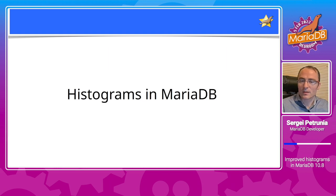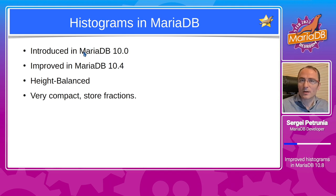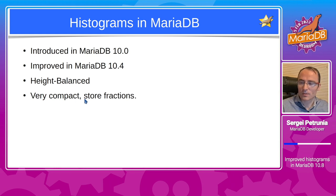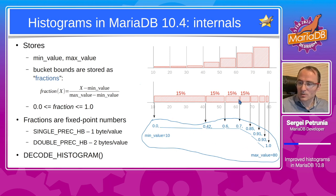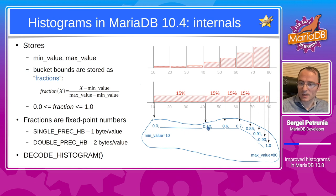Histograms in MariaDB were introduced back in MariaDB 10.0, then improved in MariaDB 10.4. MariaDB uses height-balanced histograms, but unlike other databases it uses a very compact format where it doesn't store values but stores fractions. It stores the minimum value, the maximum value, and for bucket boundaries between them it stores a fraction — a number between 0 and 1 representing how close the value is to the minimum (0) or maximum (1). For example, the first bucket is at 42% between minimum and maximum, the second at 60%, and so forth.